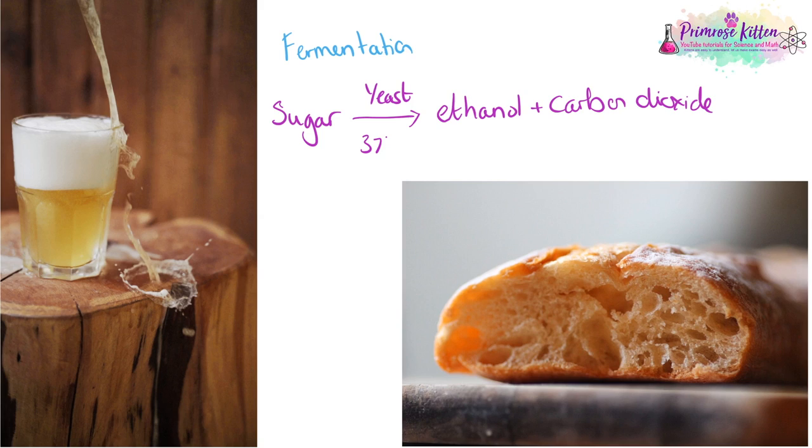Another way of producing alcohol is fermentation. This is where we take sugar, we mix it with yeast, we keep it nice and warm. And we're going to get ethanol, which you can use for alcohol, or carbon dioxide, which makes the bubbles in bread. Exactly the same process, beer making and bread making.